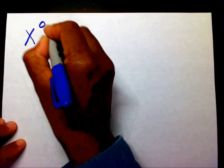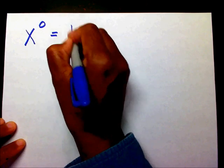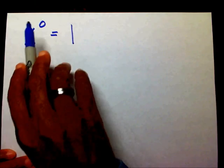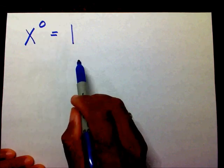The rule is x to the zero power equals one. Any number to the zero power equals one, whether it's